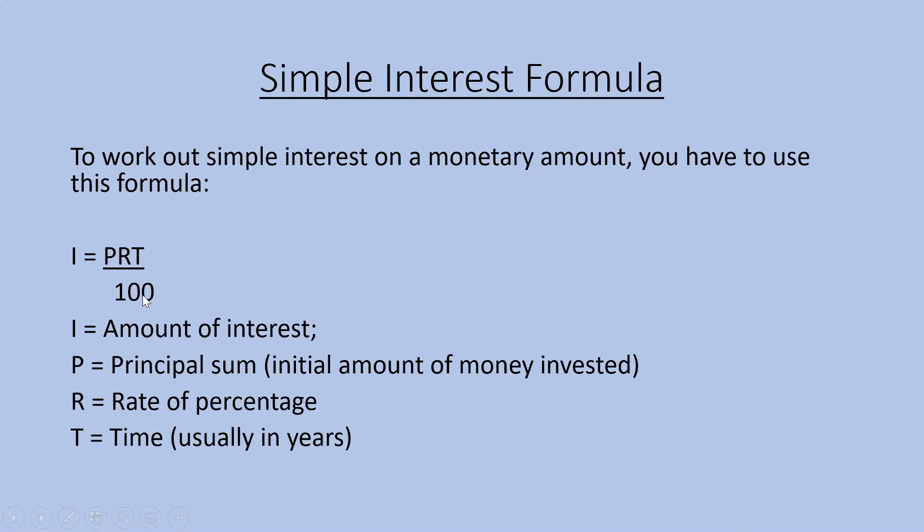In this formula, I equals the amount of interest — that's ultimately what we're trying to work out. P stands for principal sum, which is the initial amount of money invested or loaned. R is the percentage rate, and T stands for time, which is usually the number of years in which that money has to be paid back over.